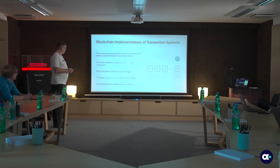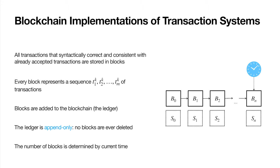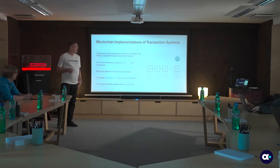Every block represents a sequence of transactions. Block K represents a sequence of transactions stored in the block. Blocks are added to the blockchain at every certain unit of time. The sequence of blocks is called the ledger, and the ledger should be append-only. It should be impossible to delete blocks from the blockchain. The number of blocks is determined by the current time.